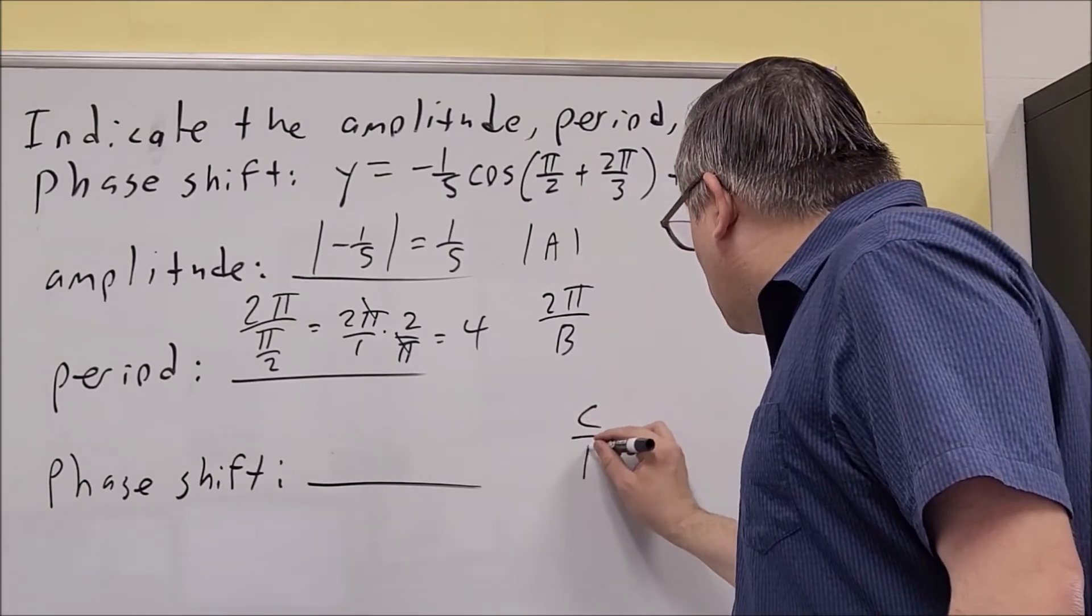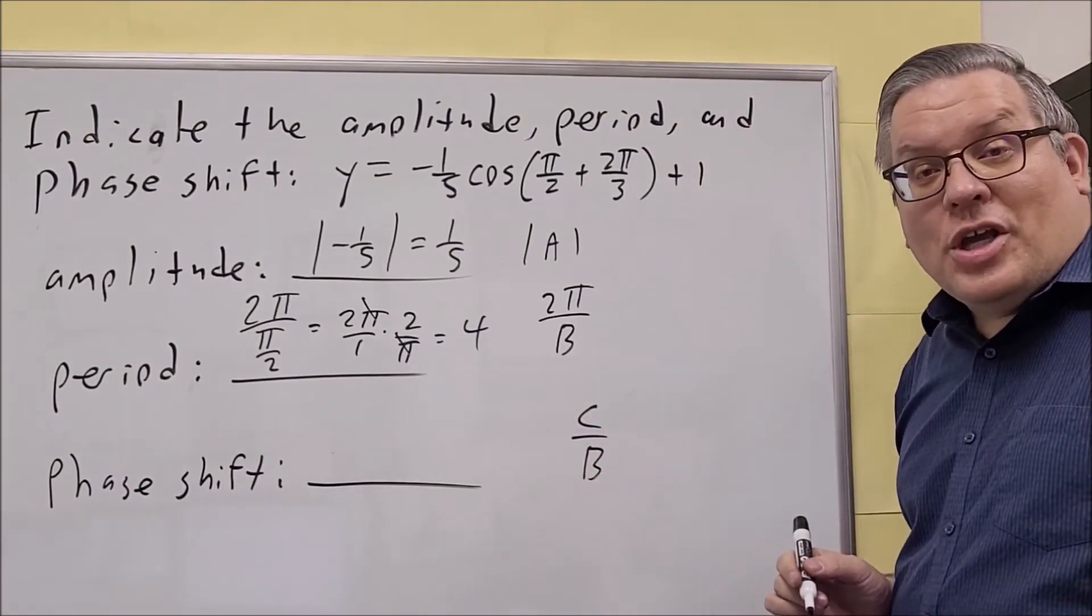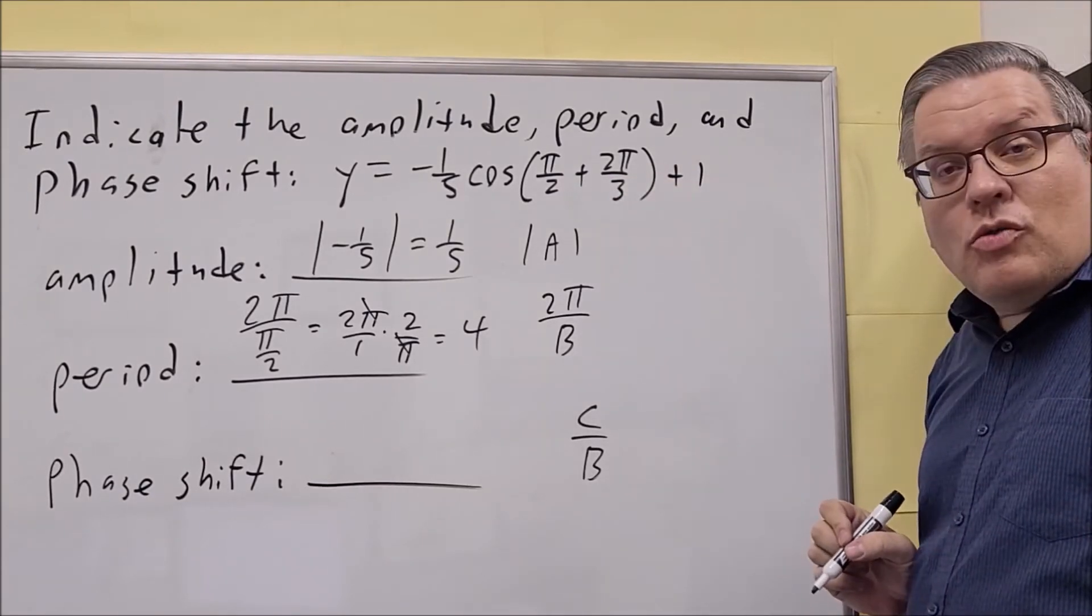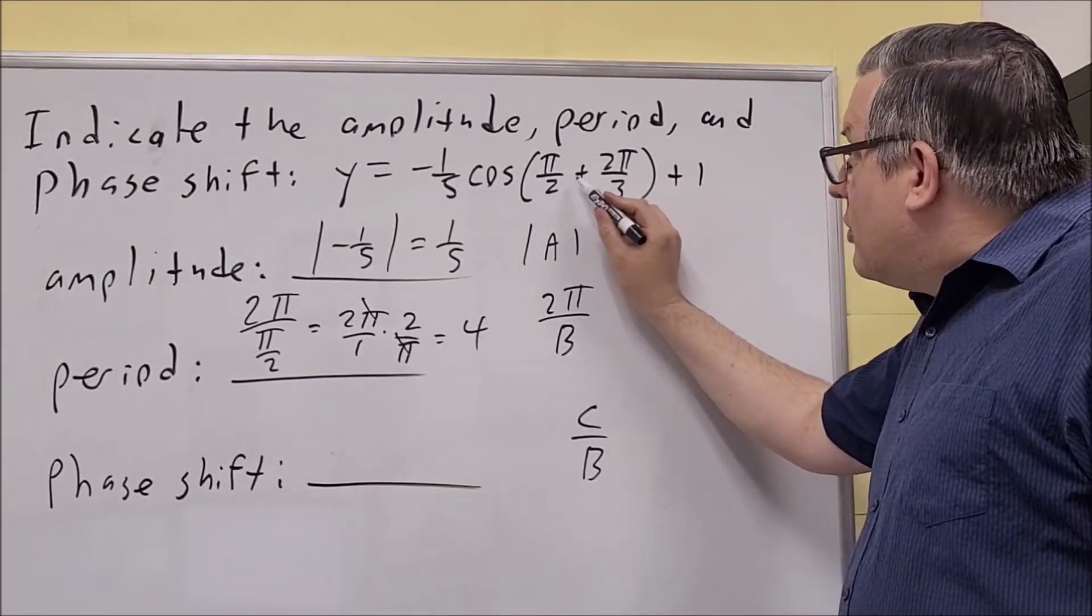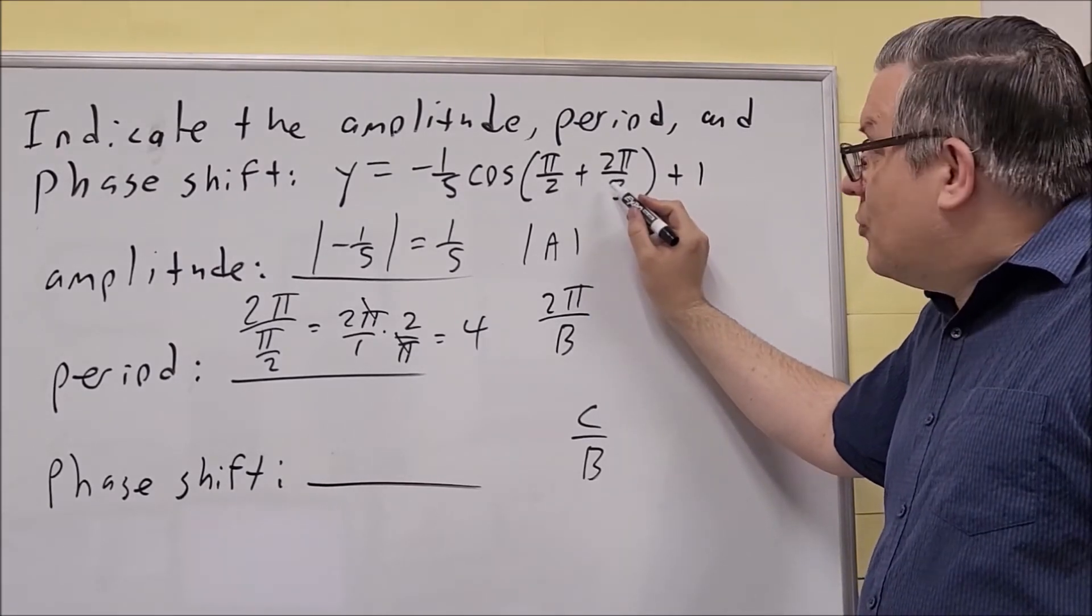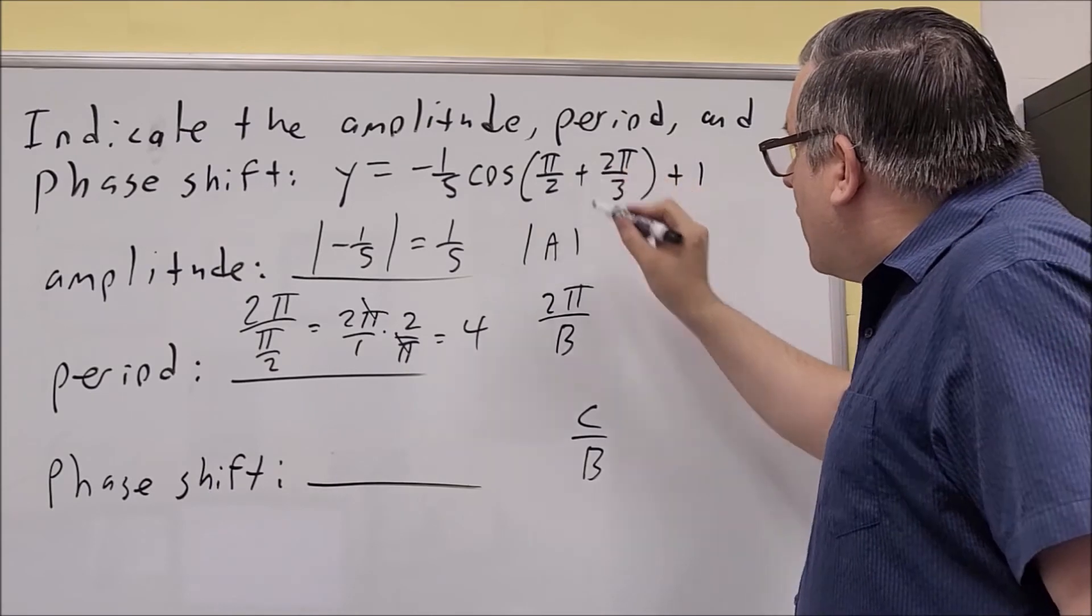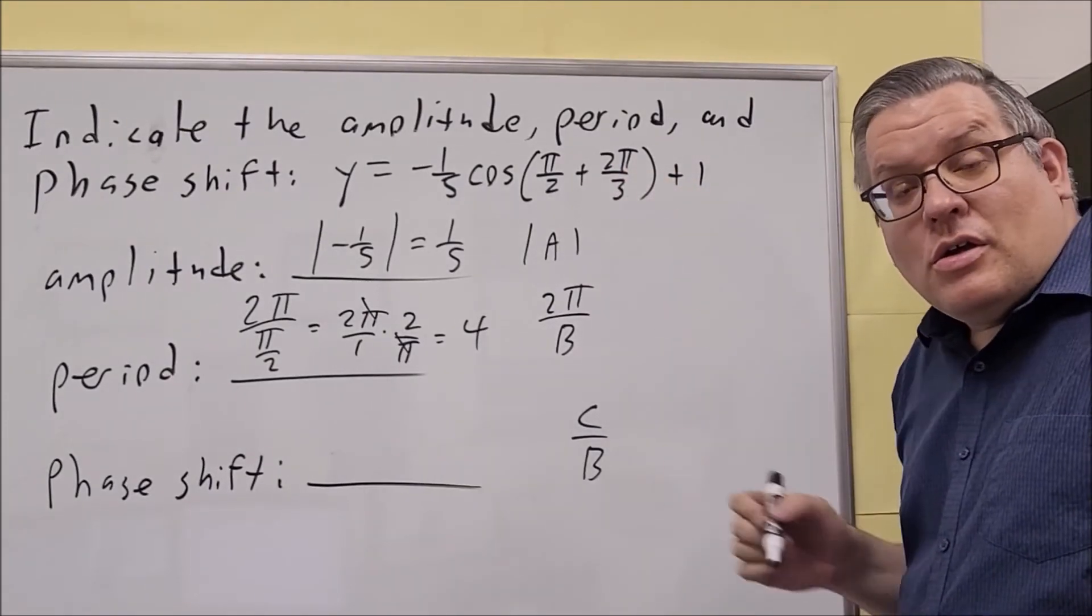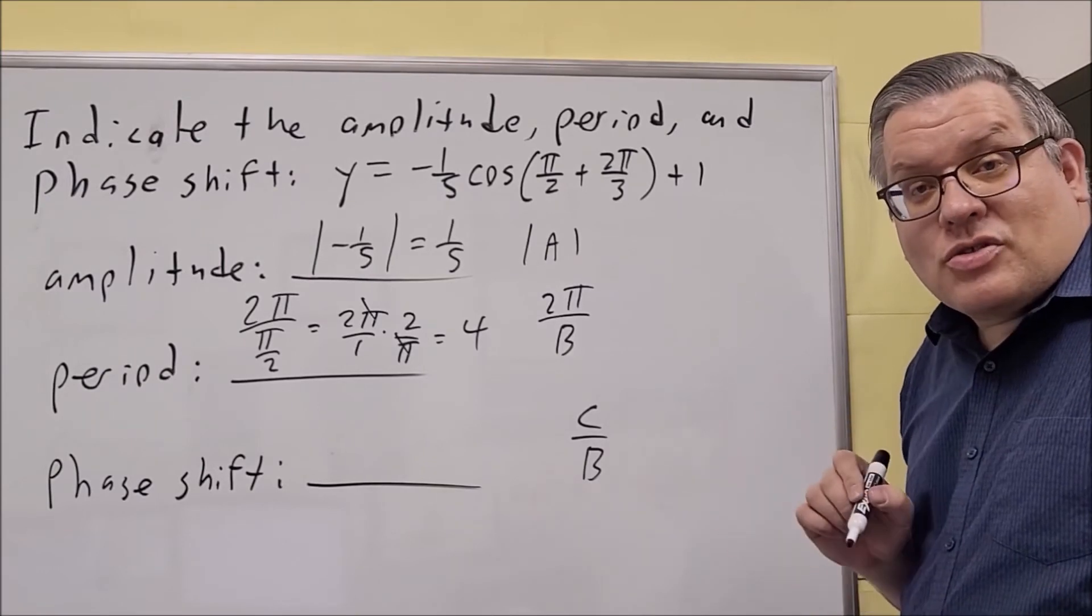Okay, so phase shift is C over B. Okay, now this time we have a plus sign. So when we put that in there, again, you can think of that as π minus 2 minus a negative 2π over 3. So because it's minus a minus, you know, whatever comes after the first minus sign would be the value for C. So in this case, your C is negative.